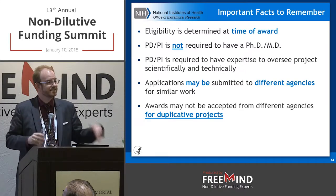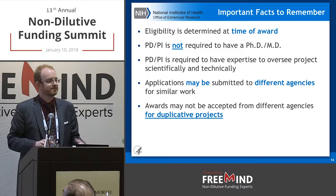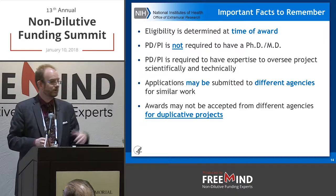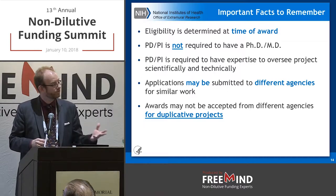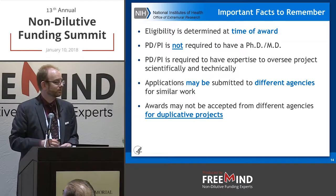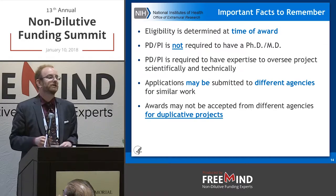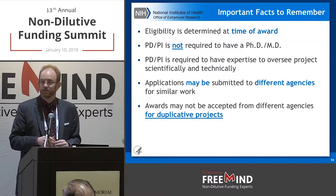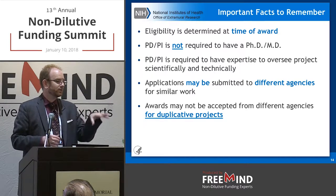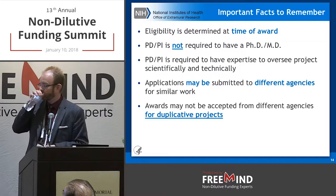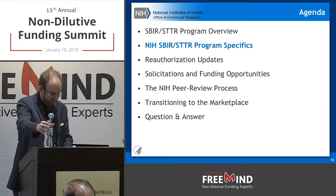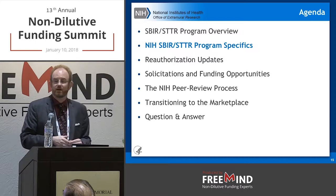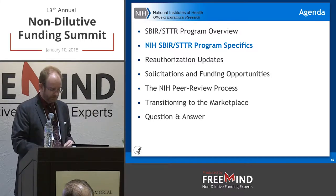Companies can submit applications to different agencies — you can send the same application to NIH, NSF, and DOD. You can't accept it twice though. Within NIH, you cannot submit the same application to two different institutes — we have secondary assignments for that. Those are the general overview rules, which apply mostly the same across all 11 agencies, with little nuances here and there.